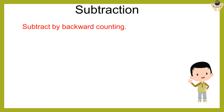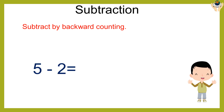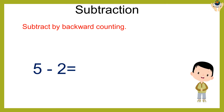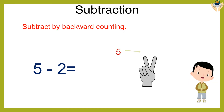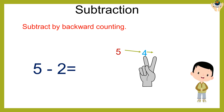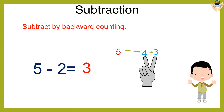Now subtract five minus two. Which is the bigger number? Five. Which is the smaller number? Two. Five in the mind, two on the finger. Start reverse counting or backward counting: four, three. The answer is three.